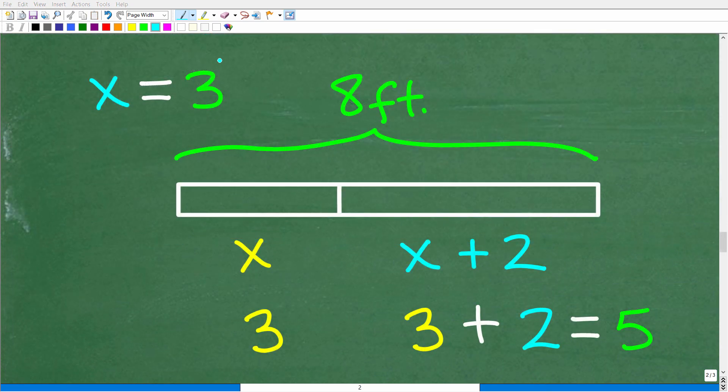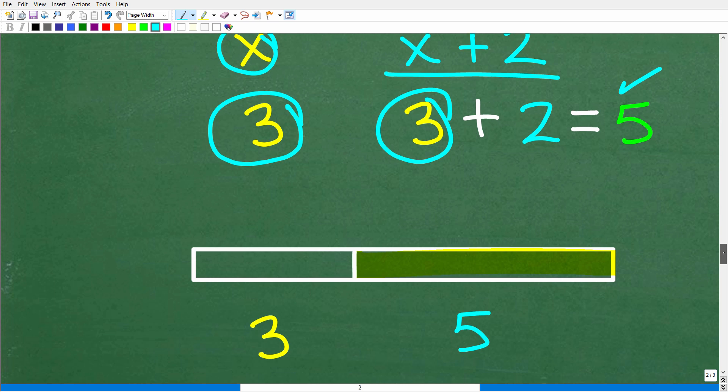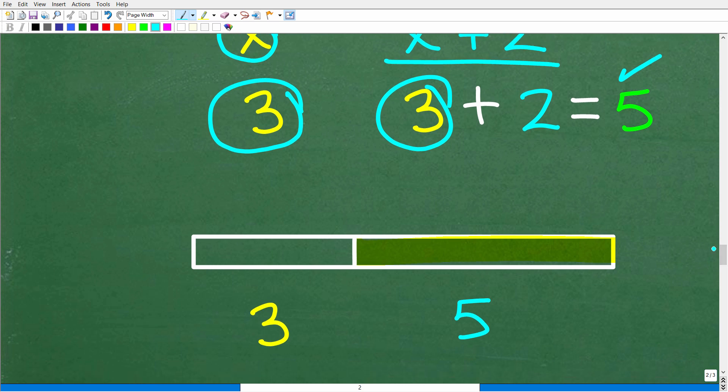Okay, so now that we know that X is equal to 3, we can actually calculate the lengths of these two pieces of this 8-foot board. All right, so recall that X represents the length of the shorter piece. So that's 3 feet, and X plus 2 is the longer piece. So that's going to be 3 plus 2, or 5 feet. All right, so now that we know the lengths of both pieces of this 8-foot board, we can calculate the cost of that longer side.